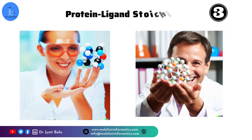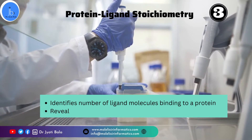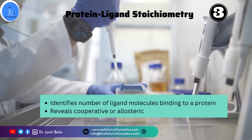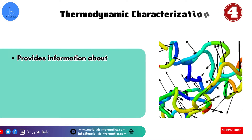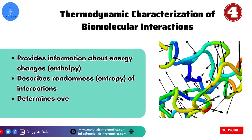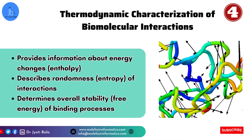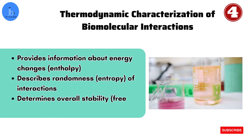Additionally, ITC can be utilized to analyze and study protein-ligand stoichiometry. It can help us identify the number of ligand molecules binding to a particular protein and can also be utilized to reveal cooperative or allosteric binding mechanisms. ITC can also help us in thermodynamic characterization of biomolecular interactions — providing information about energy changes (enthalpy), randomness (entropy), and the overall stability, that is free energy, of a binding process.